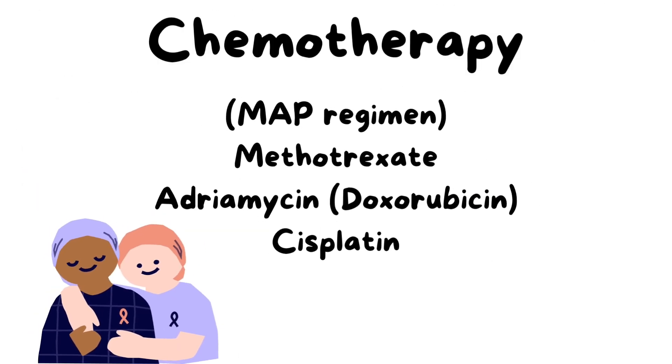One of the common chemotherapy regimens is the MAP regimen, which includes methotrexate, adriamycin (also called doxorubicin), and cisplatin.